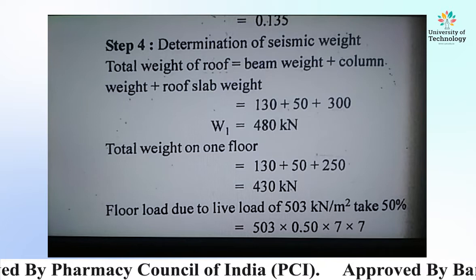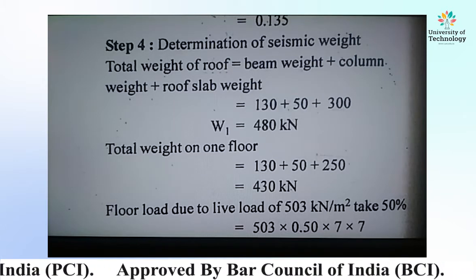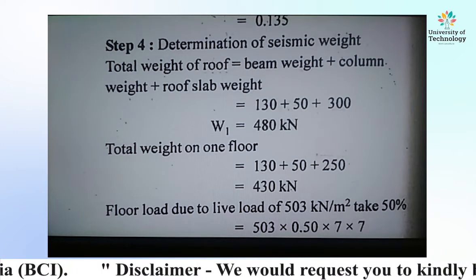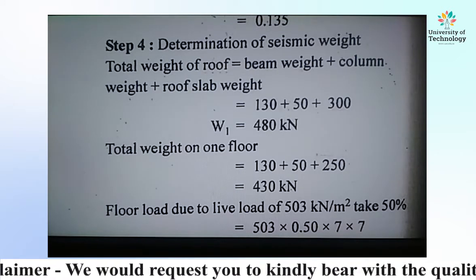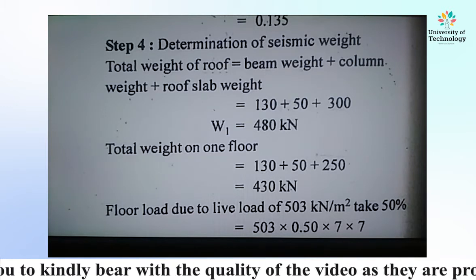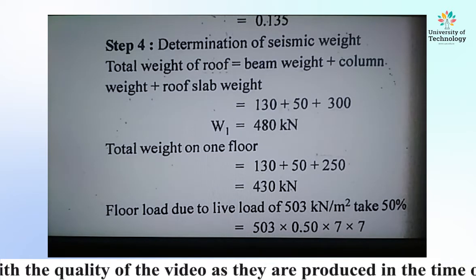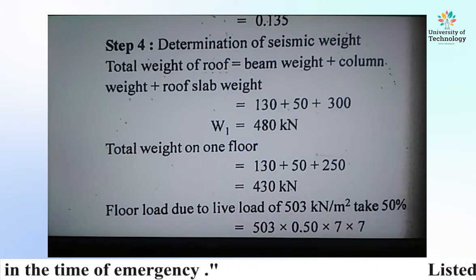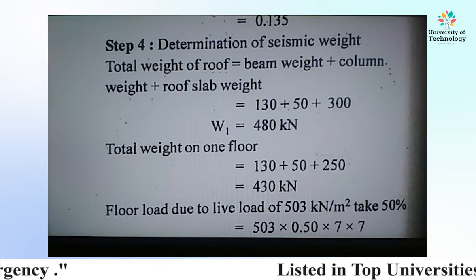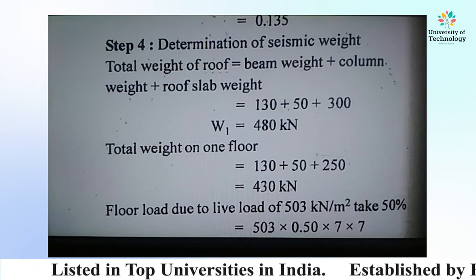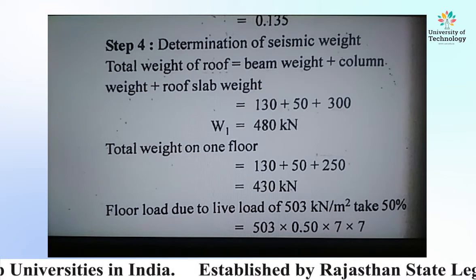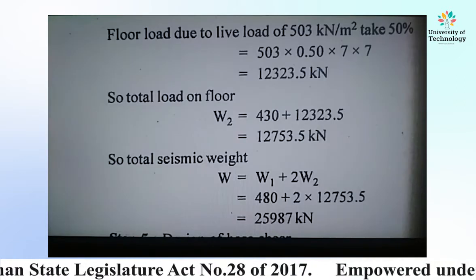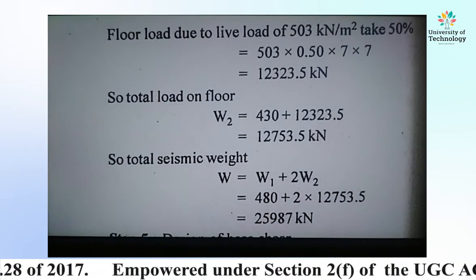Floor load due to live load of 50 kN per meter square: as per code, 50% of the live load is considered. So live load contribution = 50% × 50 × 7 × 7 = 1237.5 kN per floor. This is the floor load due to live load.